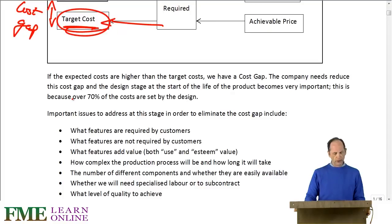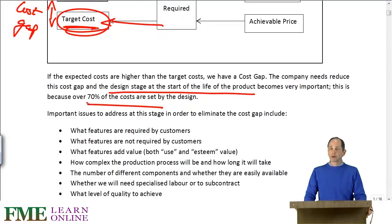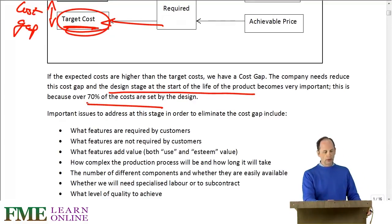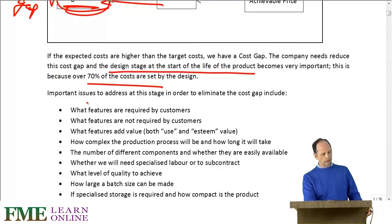If the expected costs are higher than the target costs, we need to reduce that cost gap. A lot of this is done at the design stage, because that's where probably 70% of the costs are actually fixed. Whether we can get cheaper materials or not to make it is almost irrelevant — 70% of how the product is will in many cases be unchanged after the design stage.